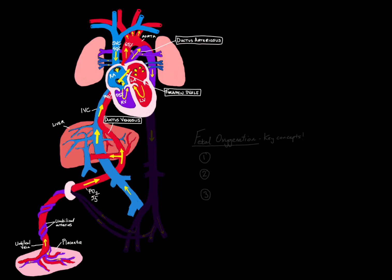The second fetal shunt is called the foramen ovale. It allows the nicely oxygenated blood to shunt across into the left atrium so it can be pumped out to the brain and the heart. The flow through the IVC is directed toward the foramen ovale, which is the direction we want. Additionally, a part of the septum secundum called the crista dividens acts almost like a little flap, helping direct blood flow from the IVC across into the left atrium.